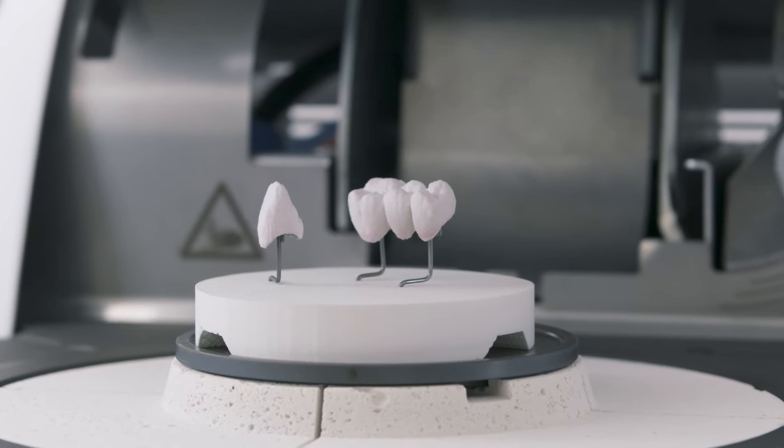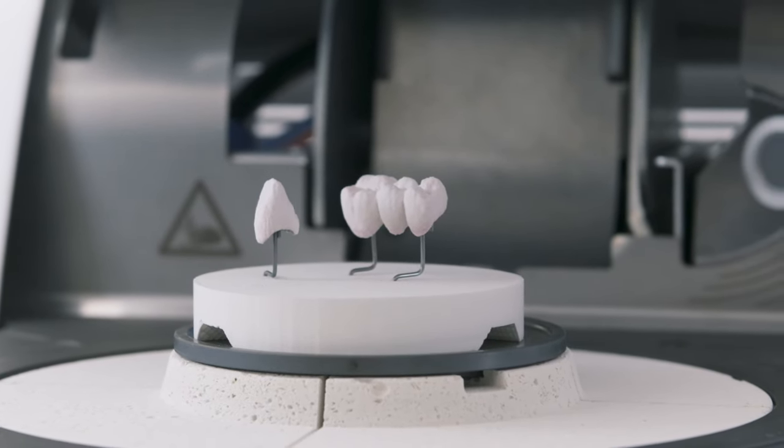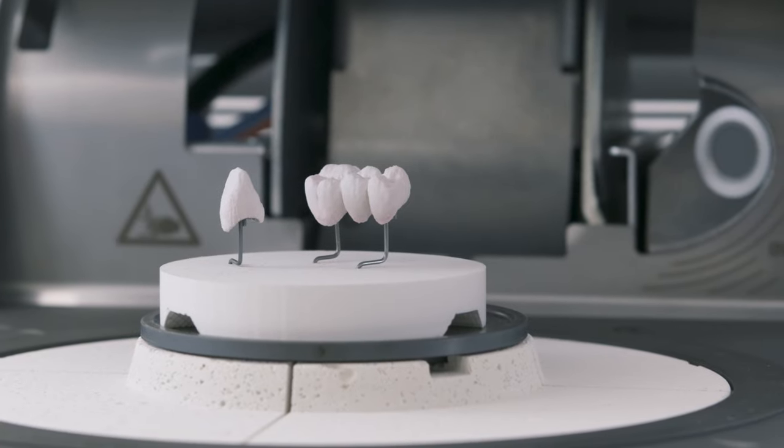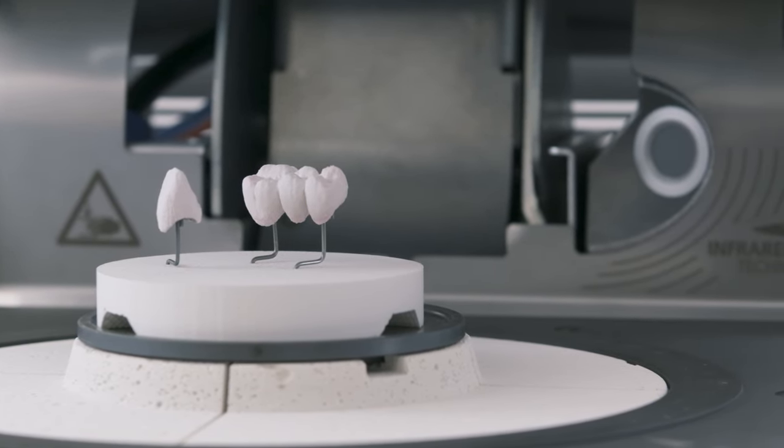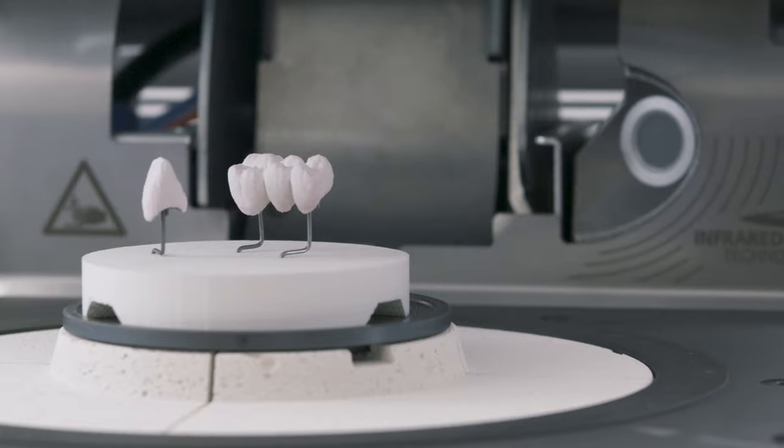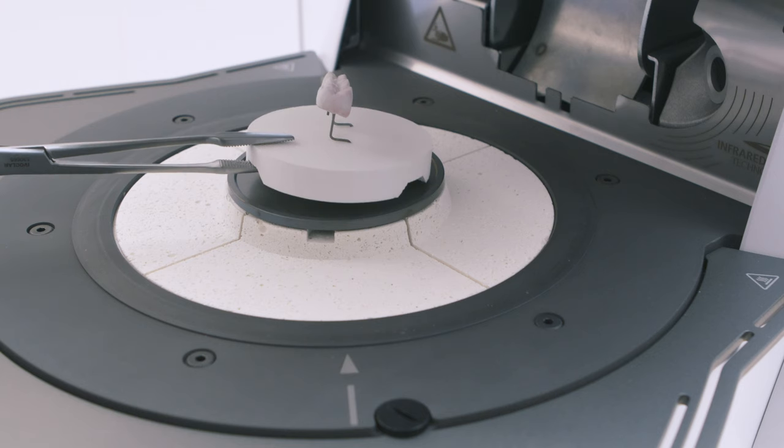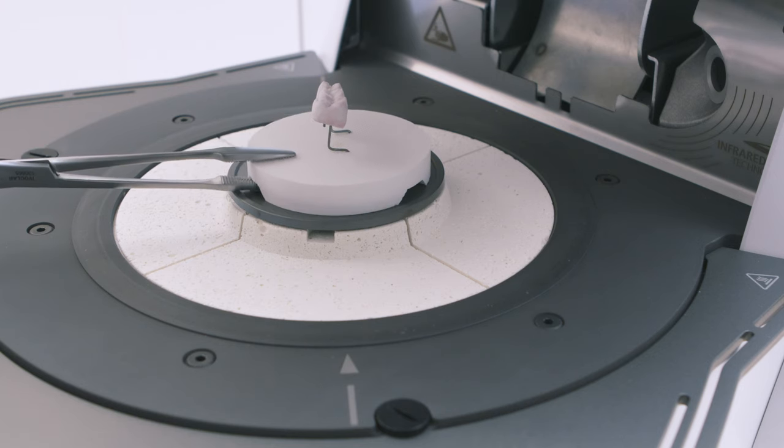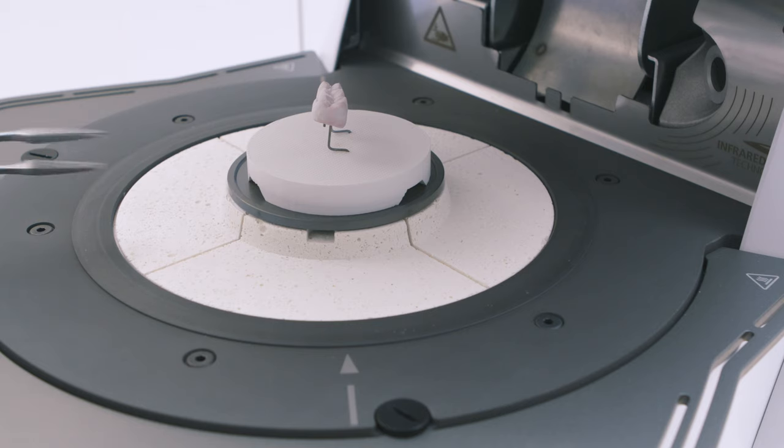If you want to fire several objects together, position the firing tray in such a way that the camera can measure the temperature on the large and bulky objects in particular. Likewise, position wet restorations in such a way that the camera can easily catch them.